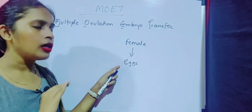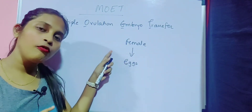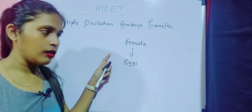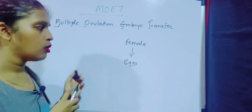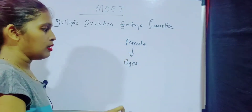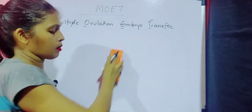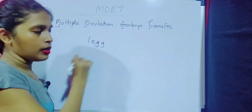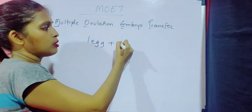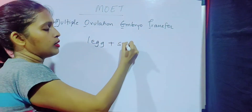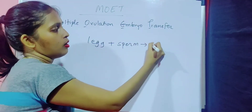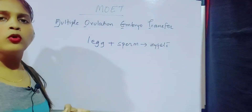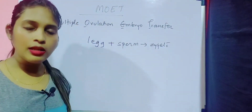In a normal cycle the female gives only one egg. So if there is only one egg coming from the female, there will be only one sperm which can unite and form the zygote. This means the progeny is going to be limited.